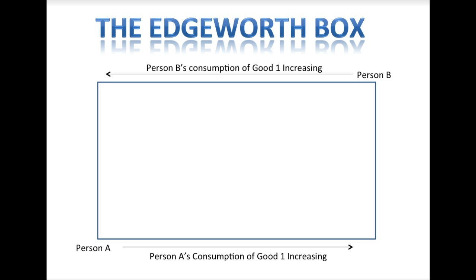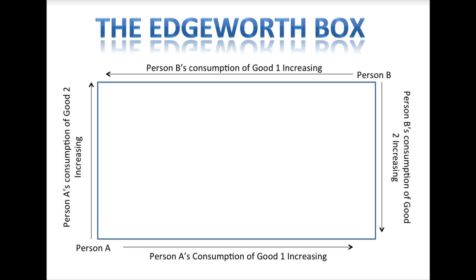We measure consumption of Good 2 along the vertical sides of the box. Person A's consumption of Good 2 increases as you move up along the left edge of the box. Person B's consumption of Good 2 increases as you move down along the right edge of the box.